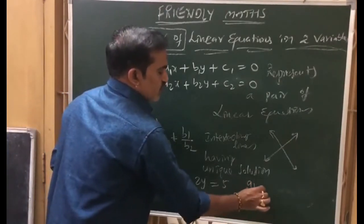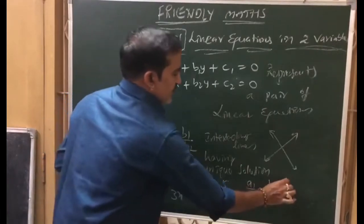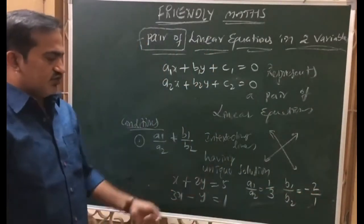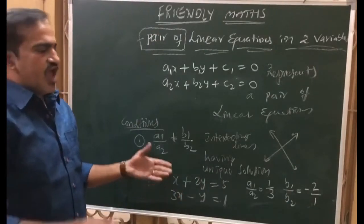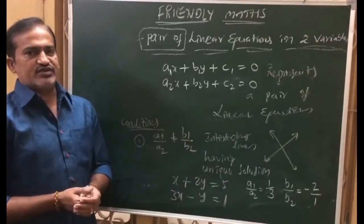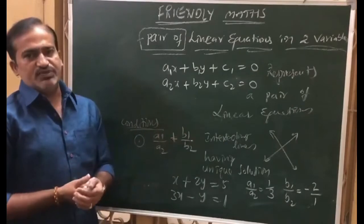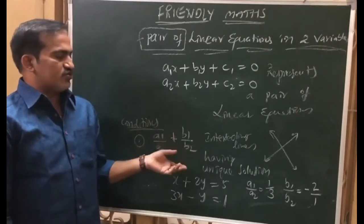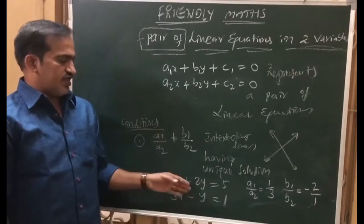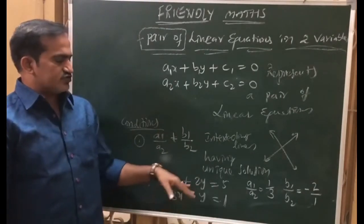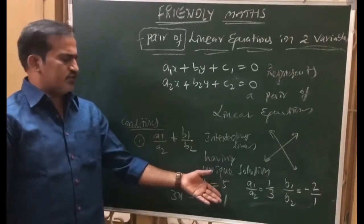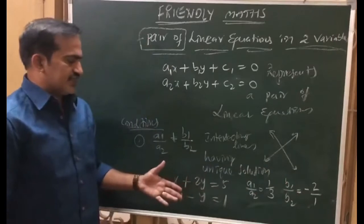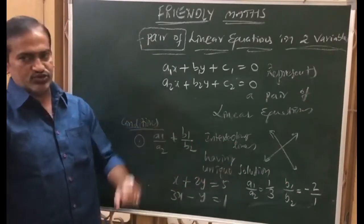For example, if a1 by a2 is equal to 1 by 2 and b1 by b2 is equal to minus 2 by 1, then a1 by a2 is not equal to b1 by b2, so we can say these are intersecting lines. This is the algebraic way — by observing the coefficients we can decide which type of lines are given. If the x coefficient ratio is not equal to the y coefficient ratio, there is no need to check constants; these are intersecting lines having unique solution.